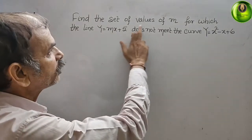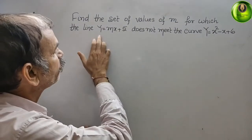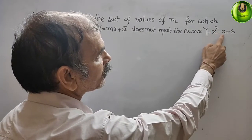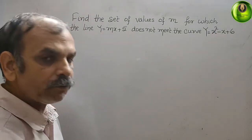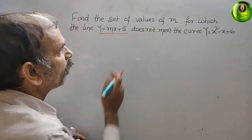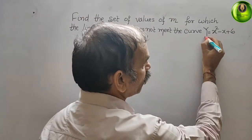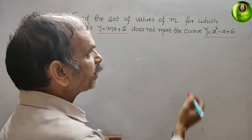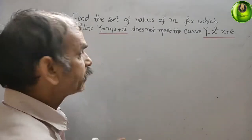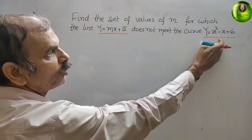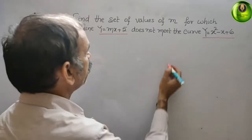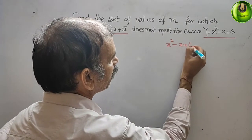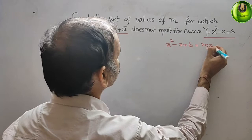Your question is: find the set of values of m for which the line y = mx + 5 does not meet the curve y = x² - x + 6. These are the two equations. You can see y is common, that means this is equal to this. So simply we will write x² - x + 6 = mx + 5.